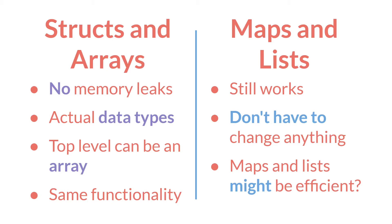Next, for structs and arrays the top level can be an array. With maps and lists the top level has to be a map, and being able to use an array at the top level is actually a really nice feature. If you look at older YouTube tutorials on this, you'll see people wrapping list structures in a map, because you had to, even though it would have made more sense for the top level to be a list. With structs and arrays, the top level can be an array, and that'll be just fine.